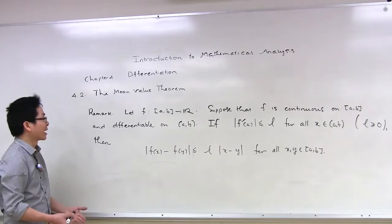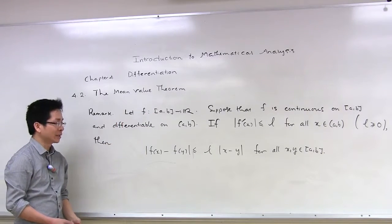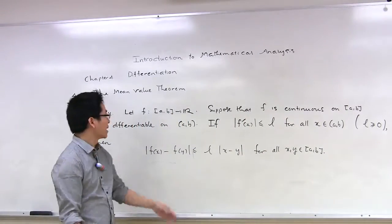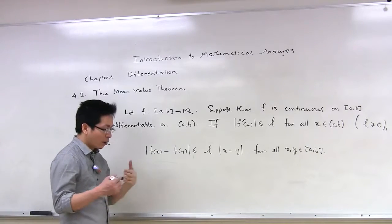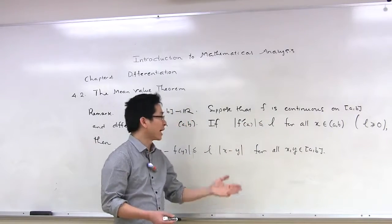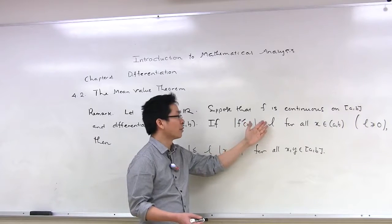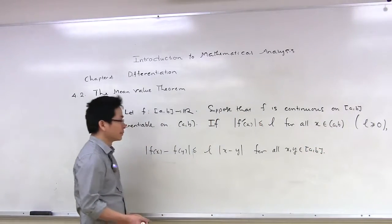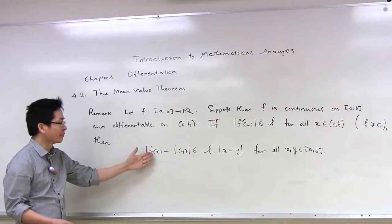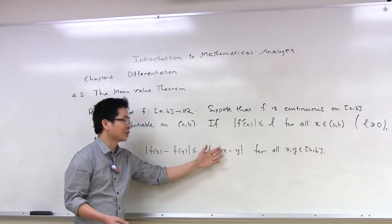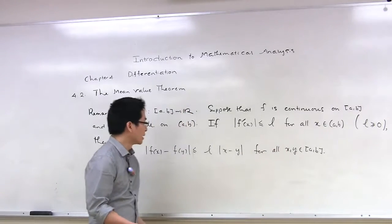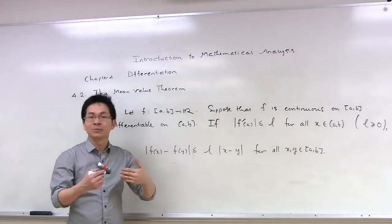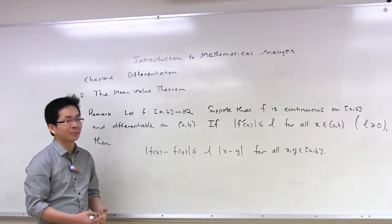After solving the problem we have an important remark. Consider a function f defined on an interval [a, b]. Suppose that f satisfies the hypothesis of the mean value theorem — that is, f is continuous on [a, b] and differentiable on the open interval (a, b) — and also that the derivative of f is bounded by a constant L, meaning the absolute value of f'(x) is less than or equal to L for all x in (a, b), where L is a non-negative constant. By the mean value theorem, we can show that the absolute value of f(x) minus f(y) is less than or equal to L times the absolute value of x minus y for all x and y in [a, b]. This means f is Lipschitz continuous on [a, b] with Lipschitz constant L, and the proof is very similar to the proof of the problem we have just solved.